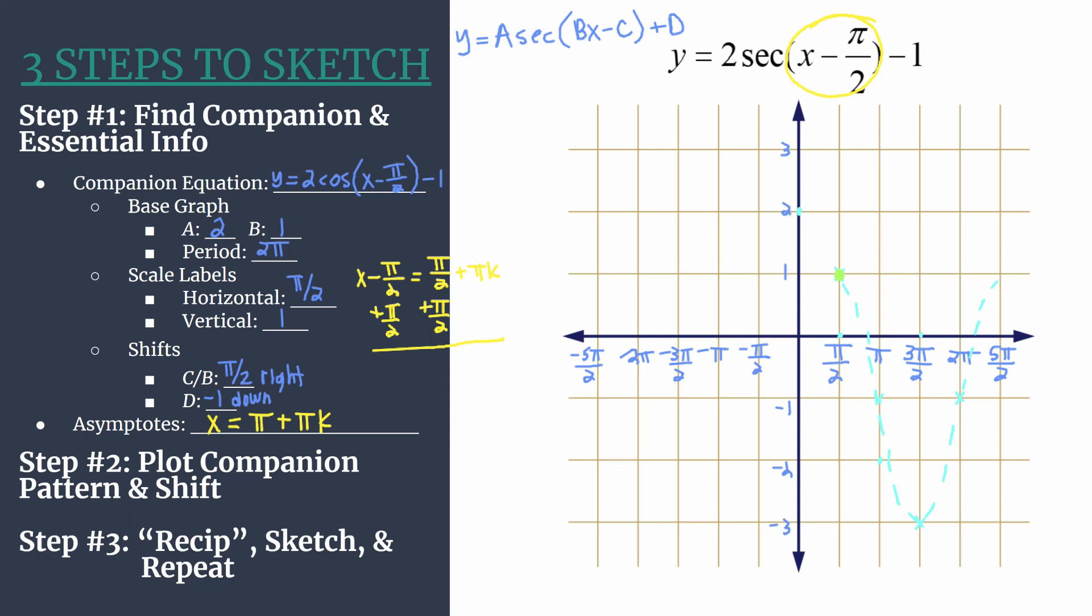Next go to the point that was an x-intercept. The x-intercepts turn into vertical asymptotes. And notice here, as I draw this one in, it's at x equals pi, and that's what we had predicted when k equals 0. Now I'll place a point on what is the minimum from the cosine companion pattern. That point is going to become a local or relative maximum as part of the secant curve here. Last point, that's going to be another vertical asymptote because it was originally an x-intercept. That was when k equaled 1, at x equals 2 pi.